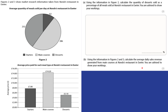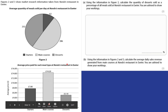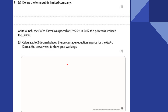Using the information, calculate the average daily sales revenue generated from main courses at Nando's. All you've got to do is identify the main courses — 286 — and multiply it by the average price of £14.20. It's 286 multiplied by that: easy revenue calculation. Define the term public limited companies — this is a company that sells its shares publicly on the stock market.